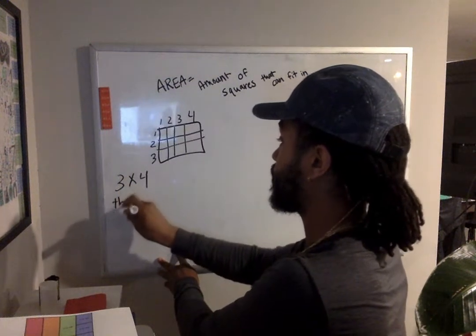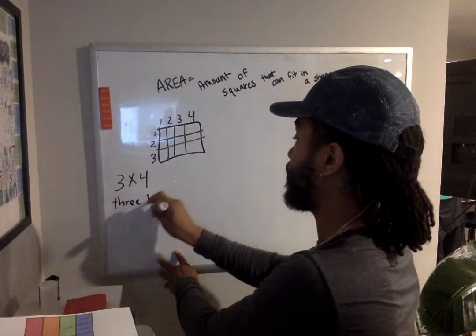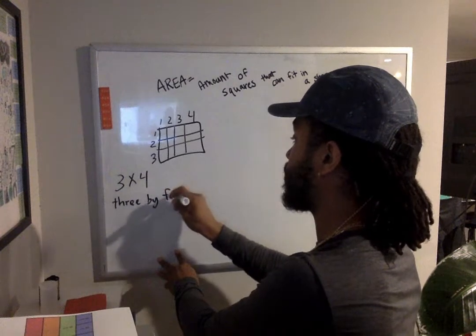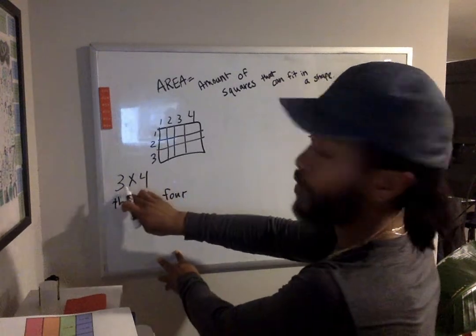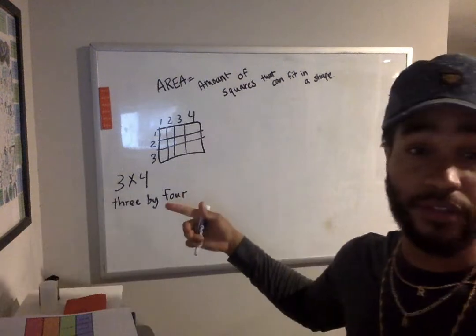I'll write it in words. Three by four. Or three times four. And the array looks like this.